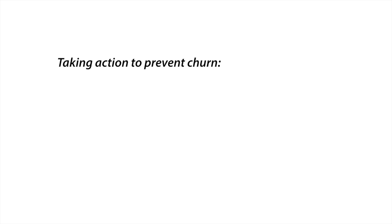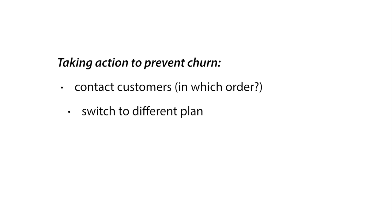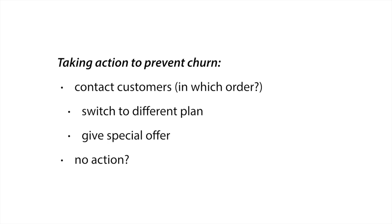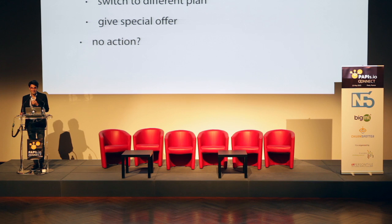What kind of action can you take to prevent churn? You can contact customers — but in which order? You can switch them to a different plan that's more appropriate. You can give them a special offer, though you have to ask if it'll work long-term. Or you could do nothing — because sometimes people churn for reasons outside your control: they don't have money anymore, or they switch platforms. In many cases you can predict that there's nothing to be done, which is very useful to take into account.